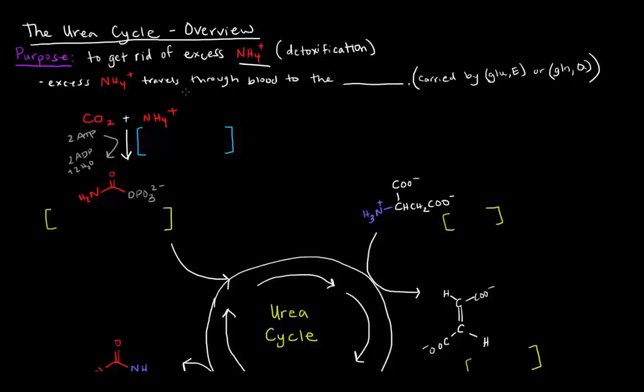This excess ammonium ion travels through the blood to the liver, specifically, where the urea cycle occurs. This ammonium ion is carried through the blood by glutamate or glutamine in the form of those amino groups on these compounds.